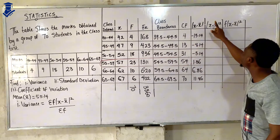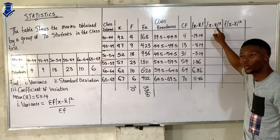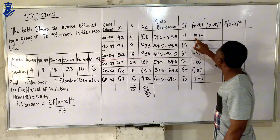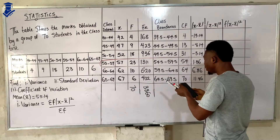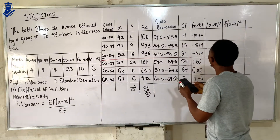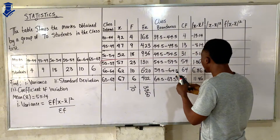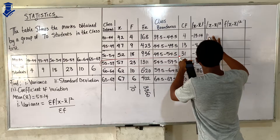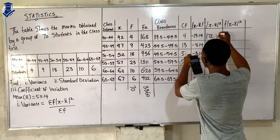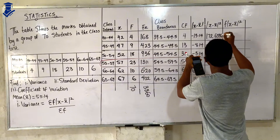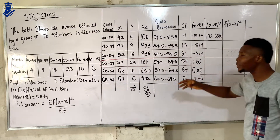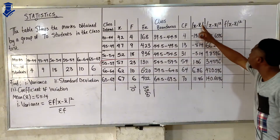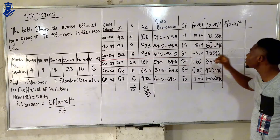The next column is (x minus x-bar) squared — we square every result we got. The first one is negative 13.14 squared, which gives us 172.6596. We take the square of each value and these results form our final squared column.